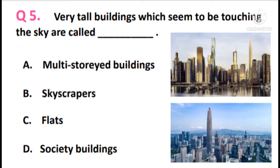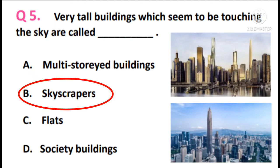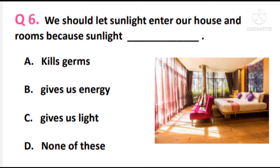Question 5. Very tall buildings which seem to be touching the sky are called dash. You can refer to the images here. The answer is option B — skyscrapers.